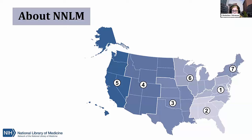The NNLM is composed of seven regional offices around the United States, and each office offers funding for organizations and communities in their regions, in addition to a wide range of training and education opportunities, including around data science and research data management. If you'd like to learn more, you can visit NNLM.gov.